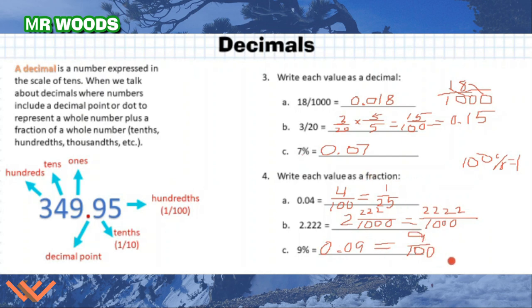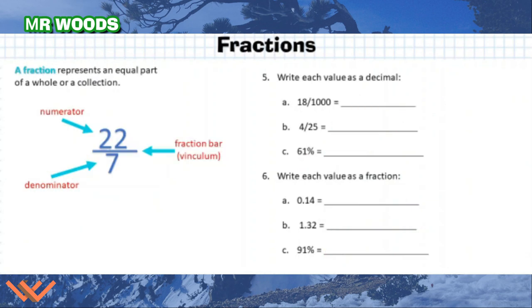Let's work with fractions here. A fraction represents an equal part of a whole or a collection. We have the different parts here. So the top number is the numerator, 22, and the denominator. And I have N for number on top and then D for down. So is seven. And then I have my fraction bar in between or the vinculum in some places in the world here. But we need to understand that we can write fractions as decimals and decimals as fractions.